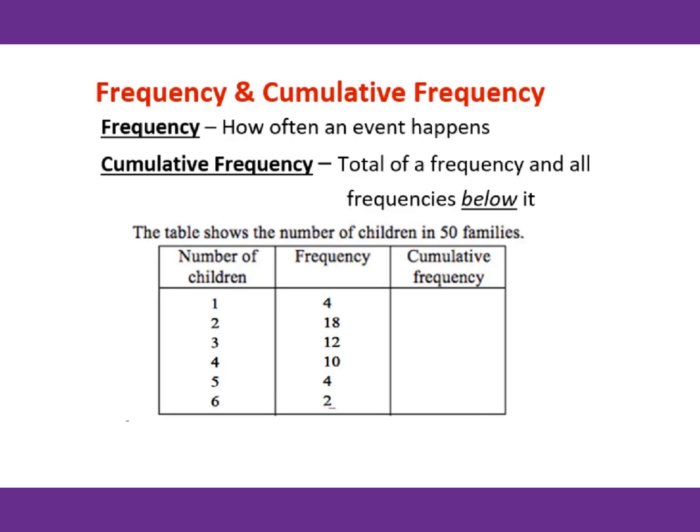Today's lesson is about frequency and cumulative frequency. Frequency means how often an event happens. Cumulative frequency means the total of a frequency and all frequencies below it. How you figure out cumulative frequency? Cumulative means add them up, add frequency up.